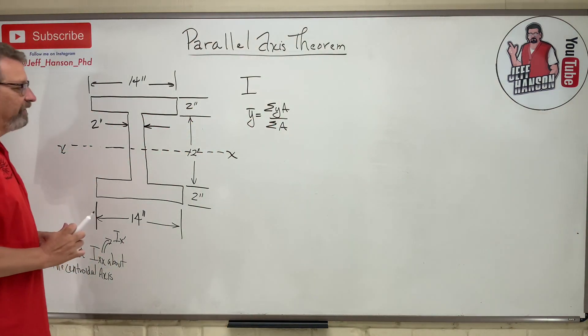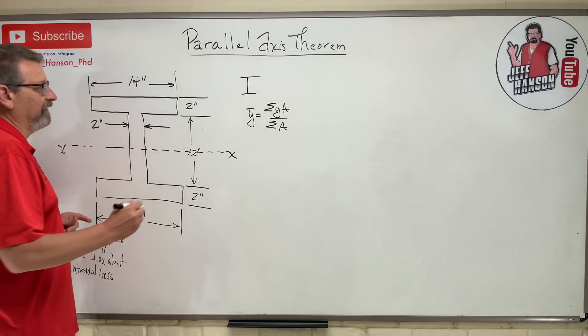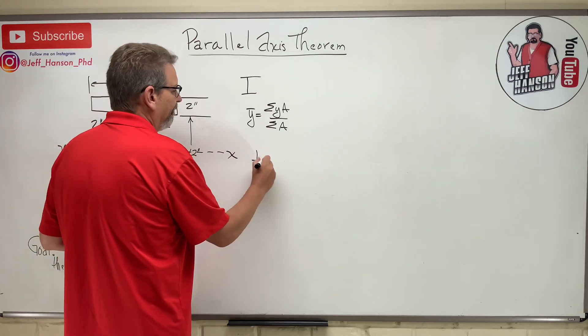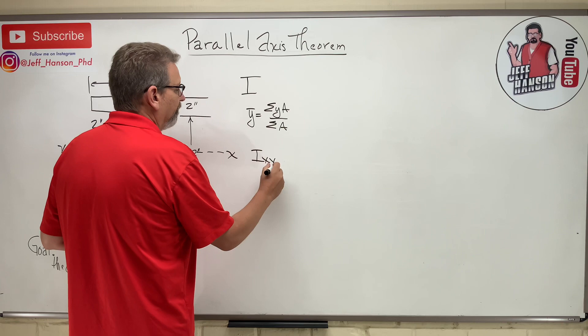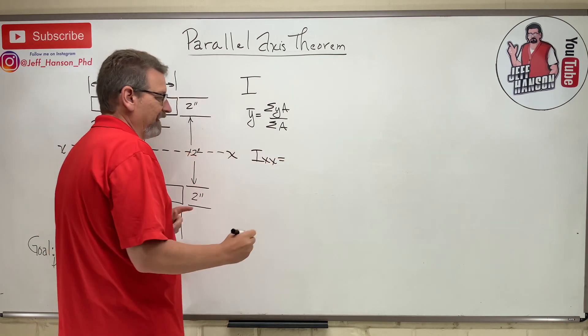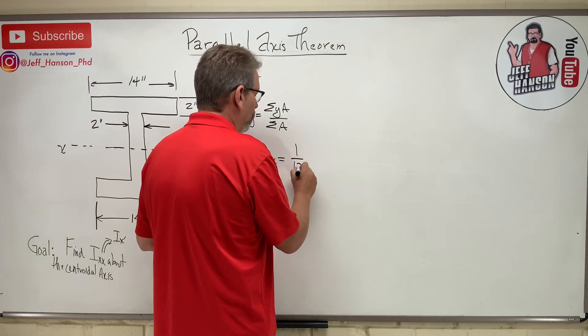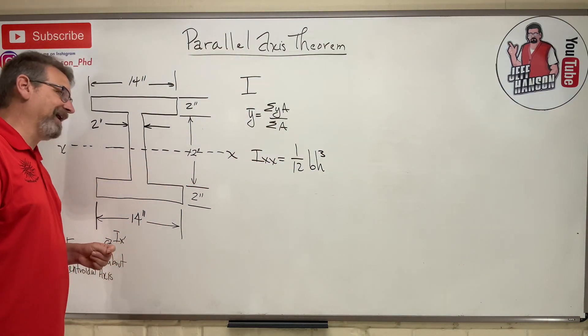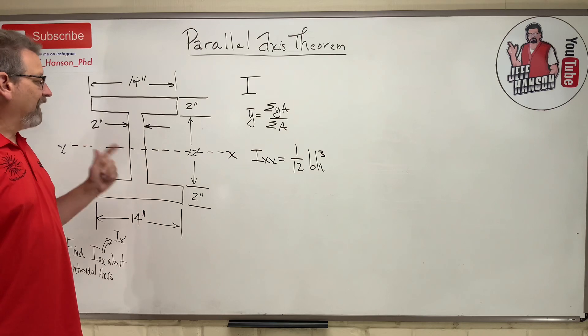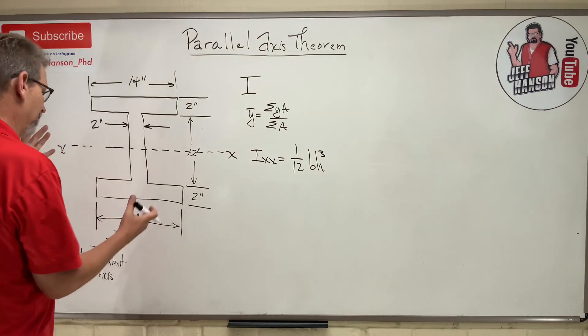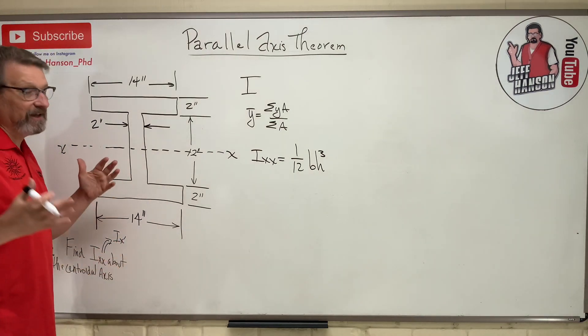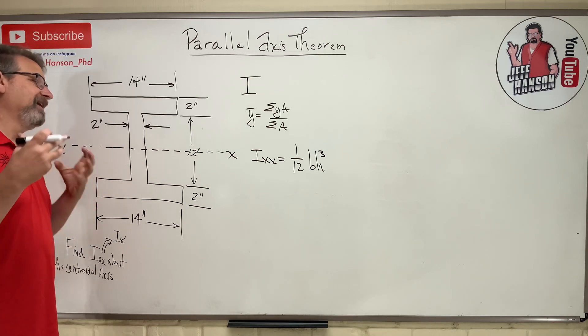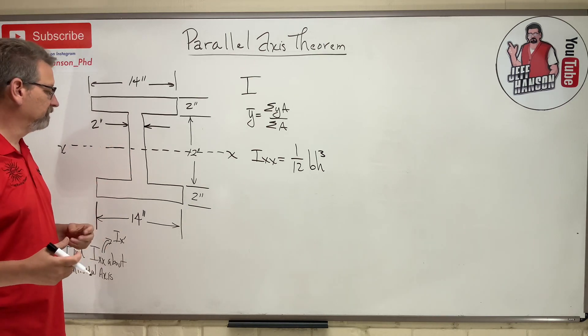So what we're dealing with here are rectangles. So we need I for rectangles, which is 1/12 b h cubed. That's the equation that's in the book for rectangles for I. So if you look at this, it's not a rectangle. It's a whole bunch of rectangles. How would you break this up?